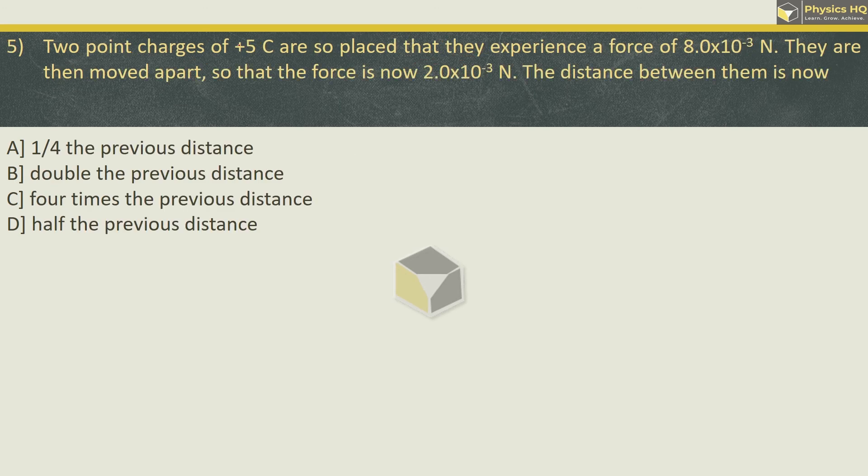Two point charges of 5 coulomb are so placed that they experience a force of 8 into 10 raised to minus 3 N. They are then moved apart so that the force is now 2 into 10 raised to minus 3 newton. Find the new distance between them.